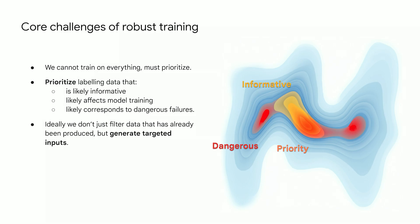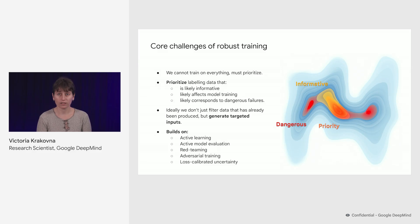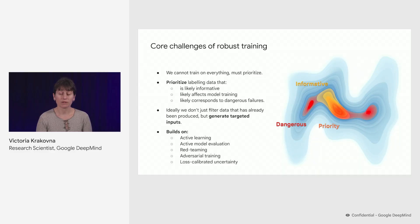Ideally, we don't just filter data that has already been produced, but generate targeted inputs. This builds on fields like active learning, which tries to find the most informative data to train on, and active model evaluation. Also red teaming and adversarial training, which focuses more on finding dangerous cases. And things like loss-calibrated uncertainty, where we're trying to estimate uncertainty — and especially trying to be good at estimating uncertainty in cases where it's actually going to matter. So that was a quick overview of robust training and monitoring.